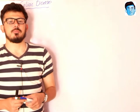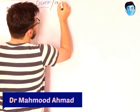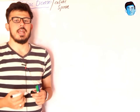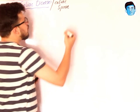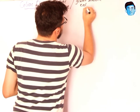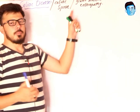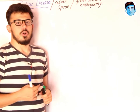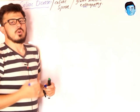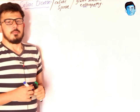Today I will be discussing a very important disease called celiac disease. It is also called celiac sprue — the word 'sprue' is related to malabsorption, which is why it is also called malabsorption syndrome. It is also known as gluten-sensitive enteropathy, where 'entero' is related to the intestine and 'pathy' means pathology or disease. So it is a disorder related to the small intestine.